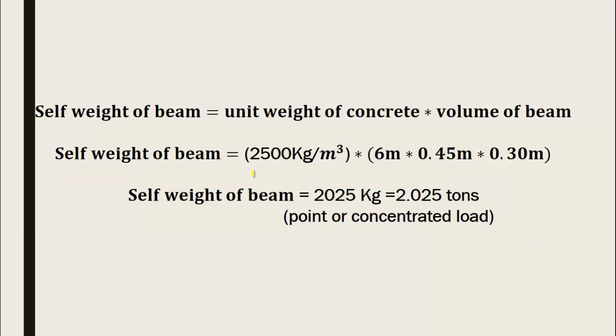Now by putting the values in the formula, self-weight of beam equals unit weight of concrete multiplied by volume of the beam. We know the unit weight of reinforced concrete is 2500 kg per meter cube. Volume is determined by multiplying length, width, and height. So we get 2500 × 6 × 0.45 × 0.30 meters. After calculation we get 2025 kg. To change this value into tons, divide by 1000, so we get 2.025 tons.